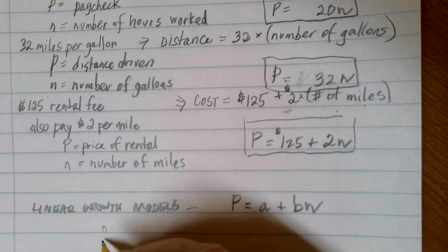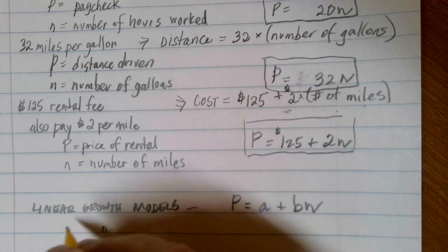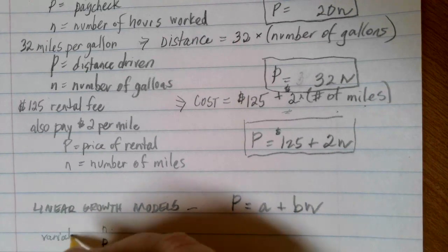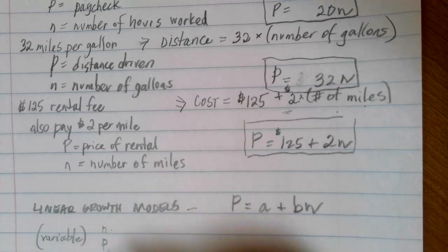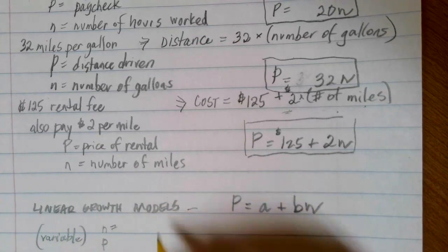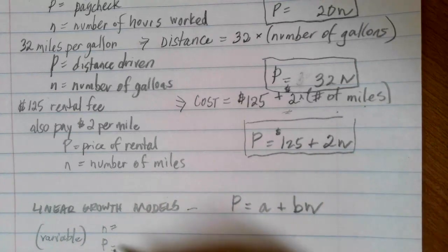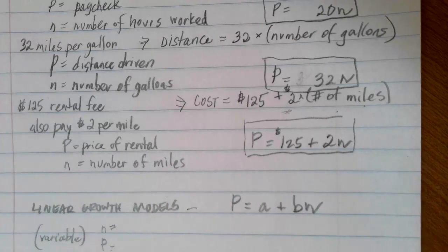N and P are your variable values. This is what affects how things are changing. So N is just going to be the number of times that go by. P is going to be the value of whatever it is that we're looking for.